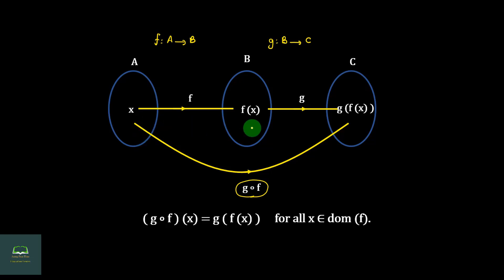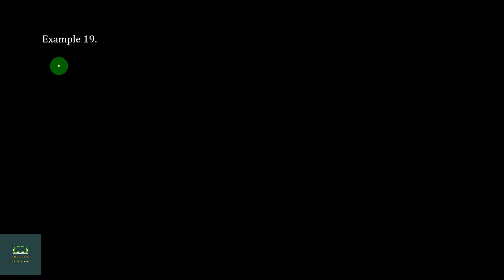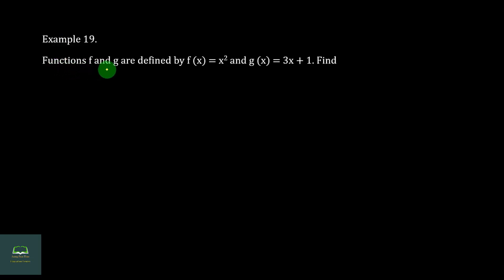The essential element in the chart — h maps to alpha, which maps to g of alpha, which is alpha of alpha. Example: functions f and g are defined by f(x) equal to x squared and g(x) equal to 3x plus 1.